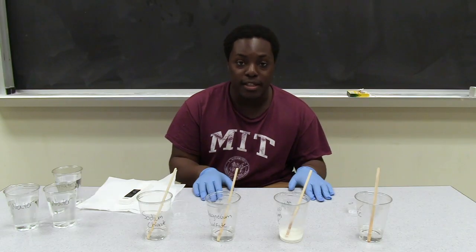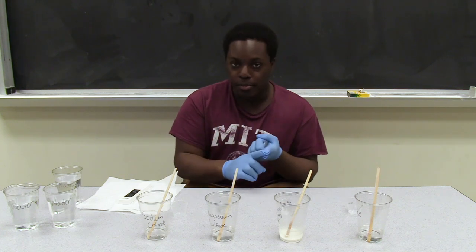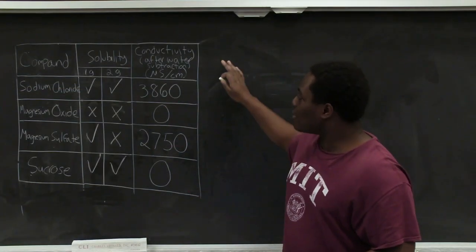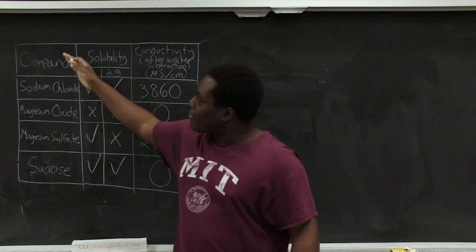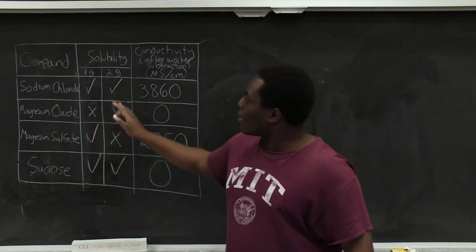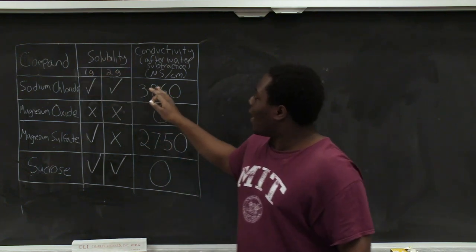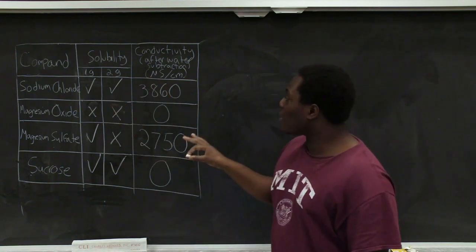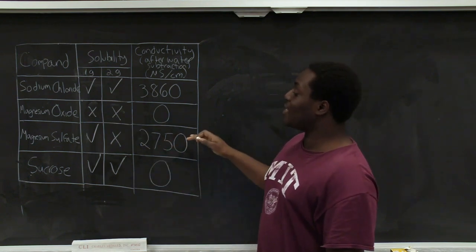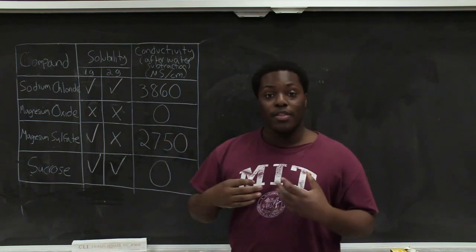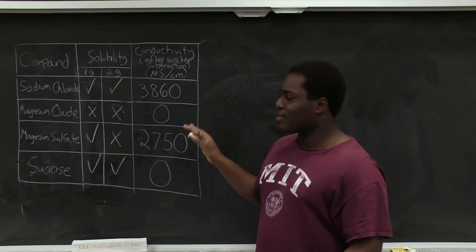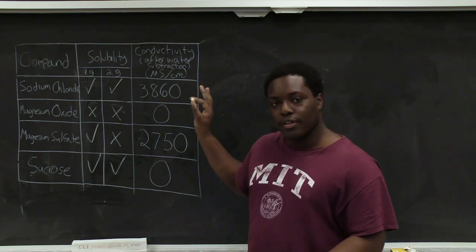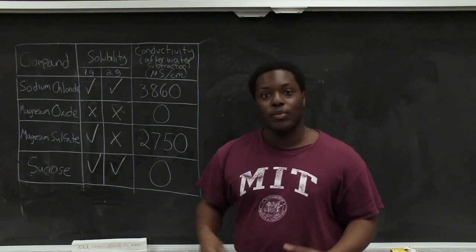Now that we've finished our last solubility test, let's put all our data — our first solubility test, our conductivity test, and our second solubility test — on the board. Here we have a chart of all the data from our experiments. I have the compounds going down, and solubility at one gram and two grams, and conductivity after water subtraction. Before going into this data, I'd like us to notice that for sodium chloride and magnesium sulfate, these conductivity values are much lower than I expected — closer to 10,000 microsiemens and 8,000 microsiemens per centimeter respectively. But the fact that we're able to measure conductivity for these compounds gives us insight into what type of compounds they are.